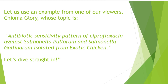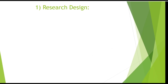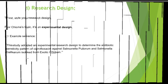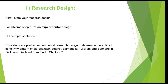I will use this topic to explain how to write your research methodology. When writing your research methodology, the first thing you need to understand is what we call your research design. You must be able to design your experiment — each experiment has what we call experimental design. For Chioma's topic, we are going to say: 'This study adopted an experimental research design to determine the antibiotic sensitivity pattern of ciprofloxacin against Salmonella pullorum and Salmonella gallinarum isolated from exotic chicken.'